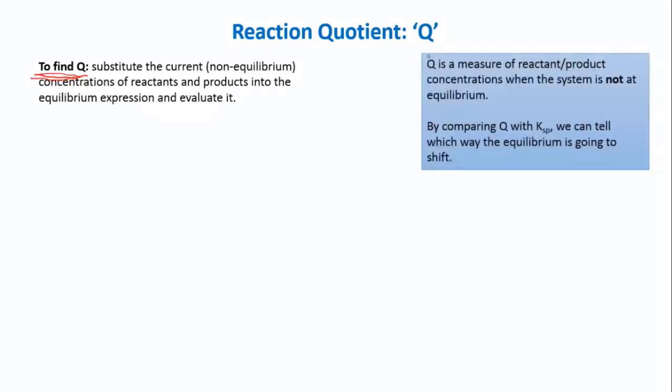You can use this value Q - it's a measure of reactant or product concentrations when the system is not at equilibrium. By comparing Q with Ksp or Keq or whatever type of equilibrium constant you're using, you can tell which way the equilibrium is going to shift.